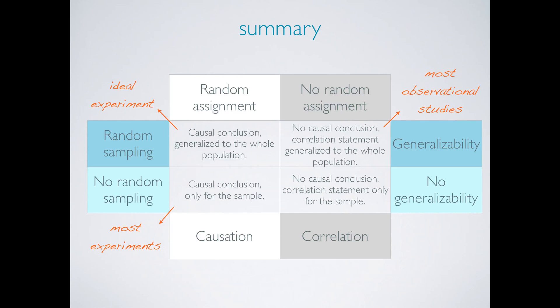A final type of study, one that doesn't use random assignment or random sampling, can only be used to make correlational statements and these conclusions are not generalizable. This is an unideal observational study.